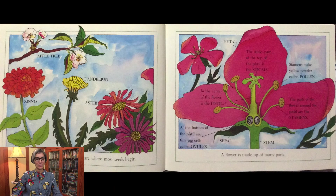Many plants grow flowers. Flowers are where most seeds begin. A flower is made up of many parts. In the center of the flower is the pistil. At the bottom of the pistil are tiny eggs called ovules. The sticky part at the top of the pistil is the stigma.